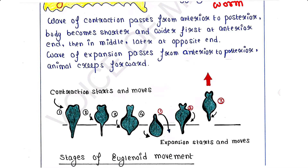This is the anterior end of the body and this is the posterior end. At the anterior part, the body starts to contract. This contraction wave moves from the anterior part toward the posterior part, as you can observe in the picture.